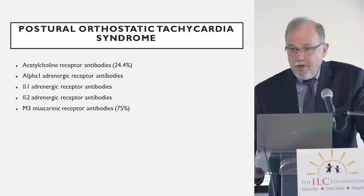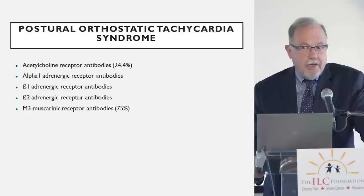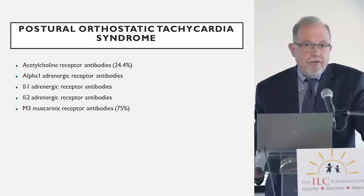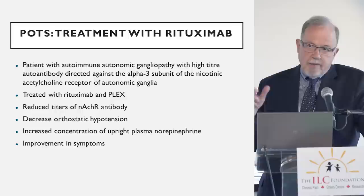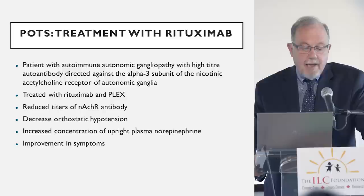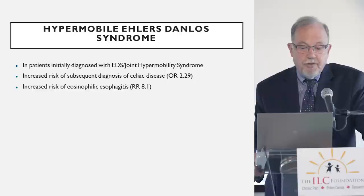People with POTS will be six times more prone than the average person to developing Hashimoto's thyroiditis, and about 500 times more likely to have a problem with their immune system than the average person. There's a very strong trend towards autoimmunity in people who have POTS, and there are a bunch of other antibodies relevant to dysautonomia seen in people with POTS. As an immunologist I find it not only interesting but informative that there's this strong predisposition to developing antibodies in people who have POTS. When we treat people with POTS with immunomodulatory drugs like intravenous immunoglobulin, rituximab, or plasma exchange, they can show improvement.